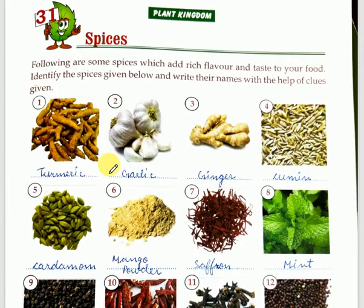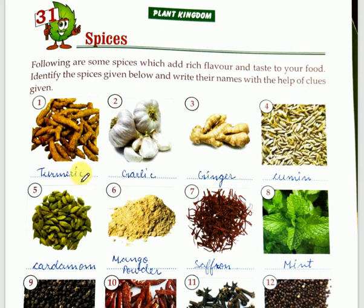Now let's move on to the next chapter — chapter number 31. This chapter is very easy and you must have seen some of these seeds at home. You can ask your mother to show them; they must be in your kitchen. Chapter 31 is Spices. Following are some spices which add rich flavor and taste to our food. You have to identify these spices.